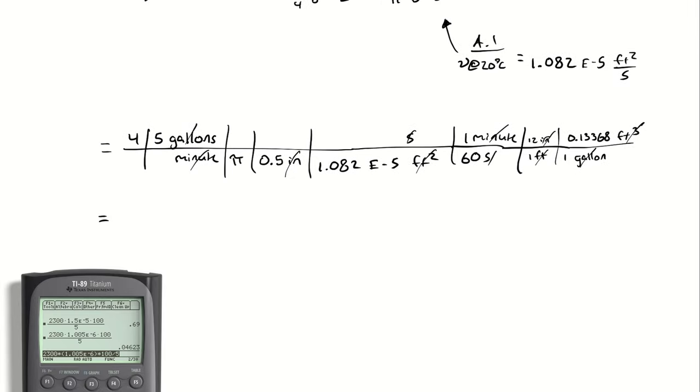So calculator, if you'd be so kind, 4 times 5 times 12 times 0.13368 divided by pi times 0.5 times 1.082 E negative sign 5 times 60 yields a Reynolds number of 31,461.5.